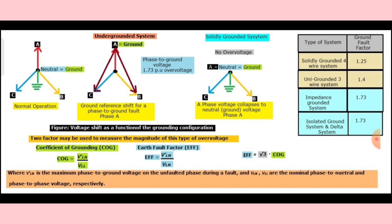On the other hand, earth fault factor is basically the ratio of VLN (the maximum voltage of the unfaulted phase during single phase to ground fault) to the rated phase to neutral voltage of that system. In other words, it is the square root of 3 times the coefficient of grounding.